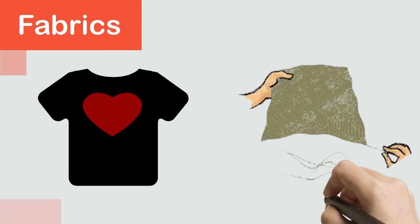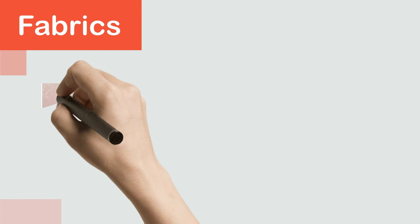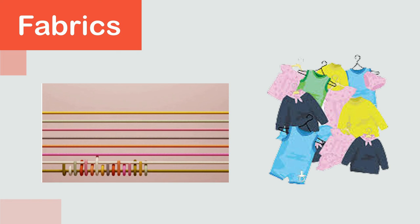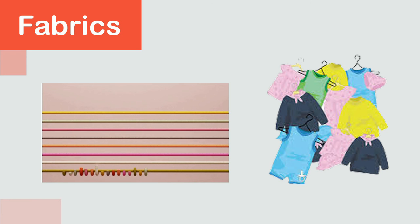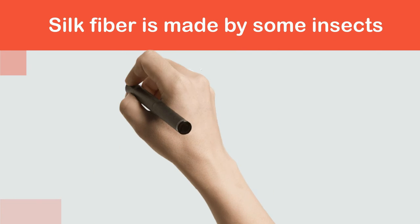Fabric: fabric is made from thin fibers which are woven together. The fibers are woven together to form threads, and then threads are woven together to make fabric. The fabric is then stitched to make clothes that we wear every day. The fiber of fabric is found in nature — cotton fiber is found in cotton plants, and silk fiber is made by some insects.